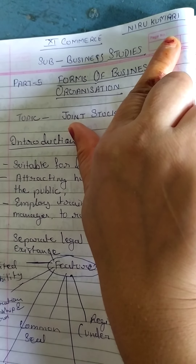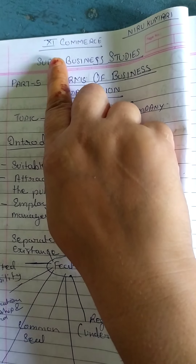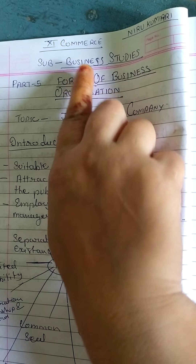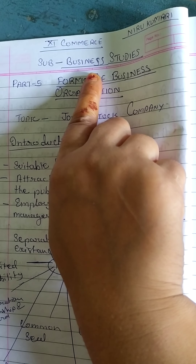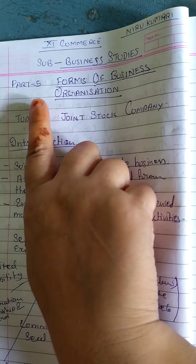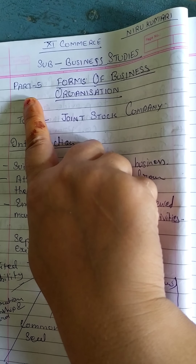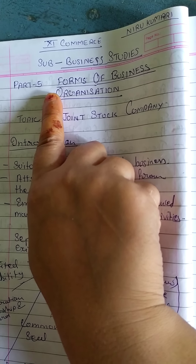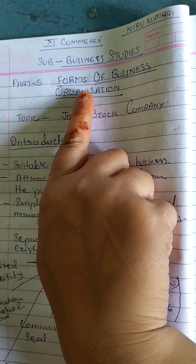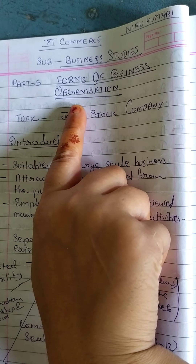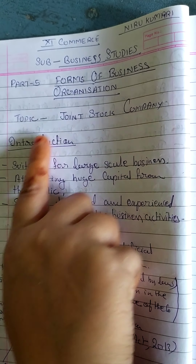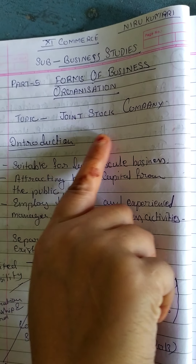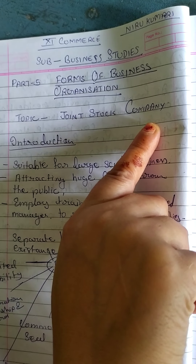Myself, Neeru Kumari. Welcome to 11th Commerce Classes of Subject Business Study. It's part 5 of Chapter 2, that is, Forms of Business Organization. Today we cover the topic, Joint Stock Company.